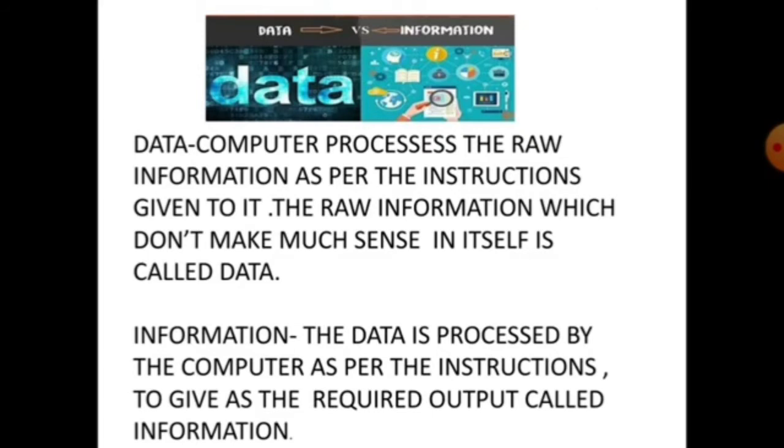Data - Computer processes the raw information as per the instruction given to it. The raw information which does not make any sense in itself is called data. Information - The data is processed by the computer as per the instructions to give the required output called information.